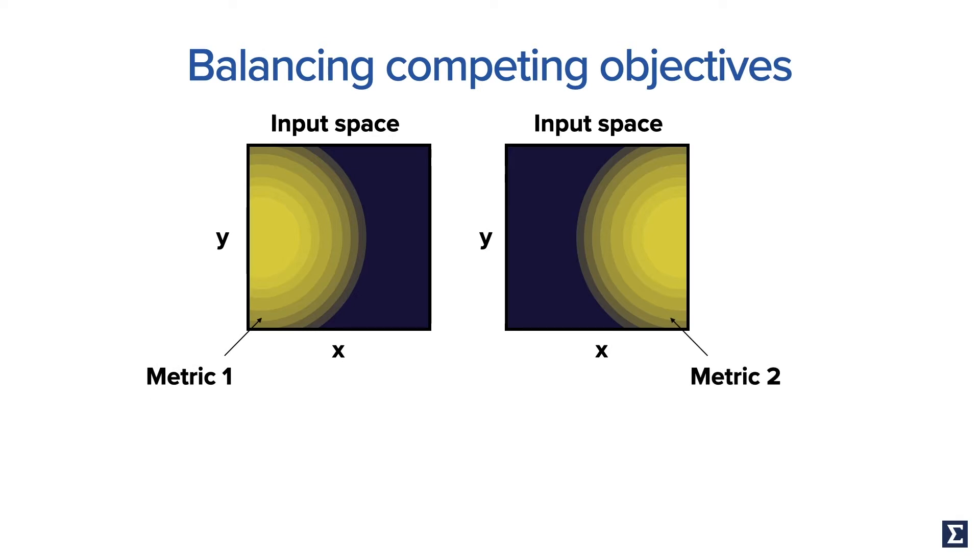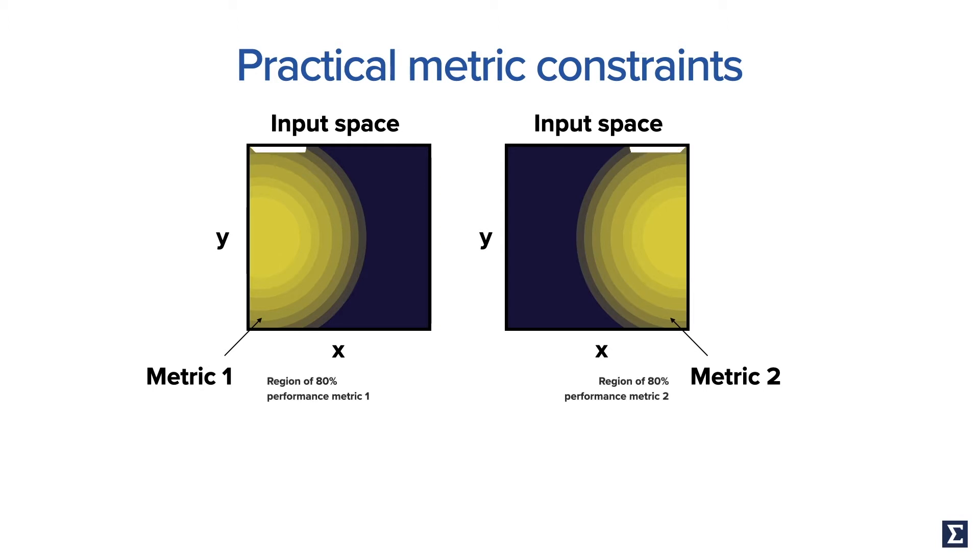There are also practical constraints on each of these metrics. For example, we want both metrics to be at least 80% effective. In practice, we implement this setting with constraints on the objective functions.